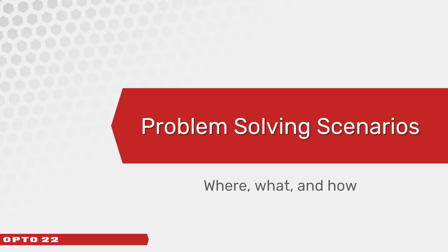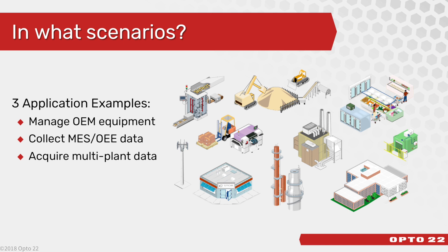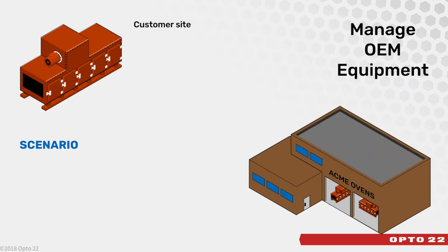Now let's take a look at how these technologies can solve nagging communication issues in various automation scenarios. We'll focus on just three for this webinar: managing remotely deployed OEM equipment, collecting MES or OEE data within your plant, and acquiring data from multiple locations back to a headquarters site.